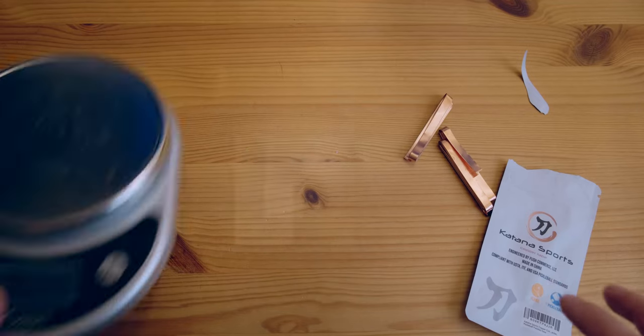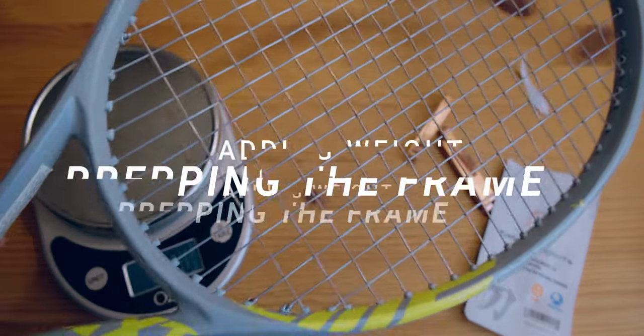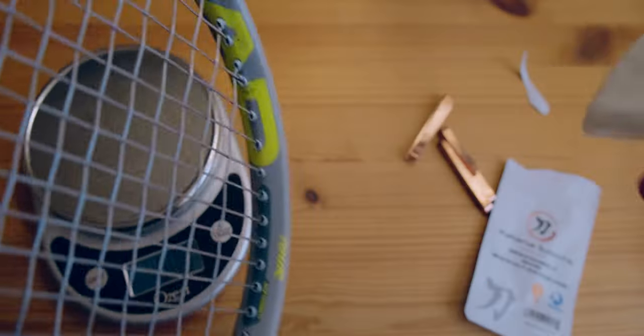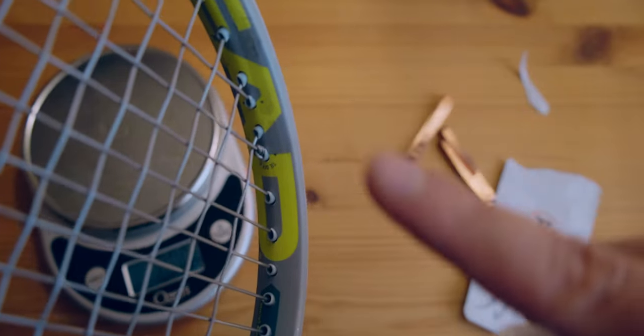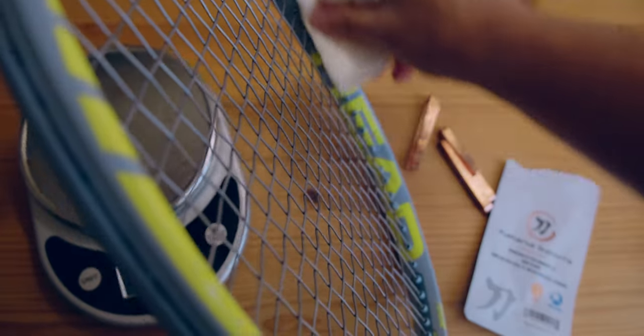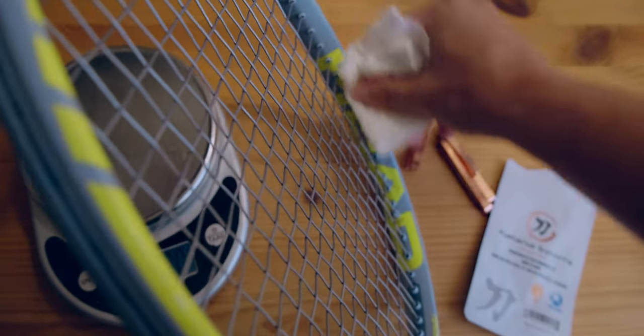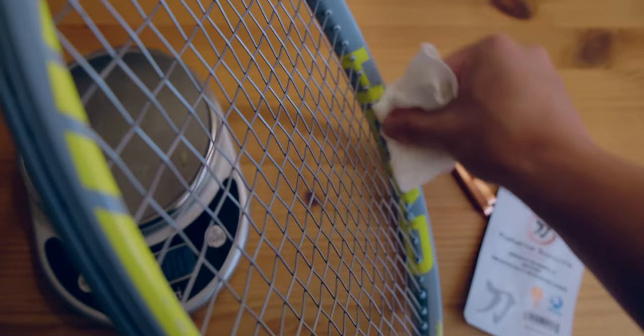Alright, so we've got our copper tape here. We've also got our scale and then you're going to want to grab, obviously, the racket. Next thing I would do is recommend like giving it a quick clean. You can see on my racket there is some residue from the lead tape before. We just want to get that off. I just have like a paper towel with some water on it, but rubbing alcohol would obviously do a much better job.